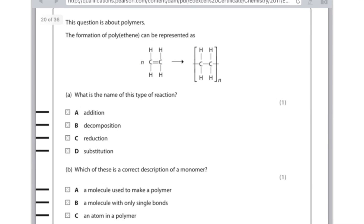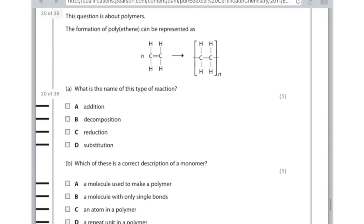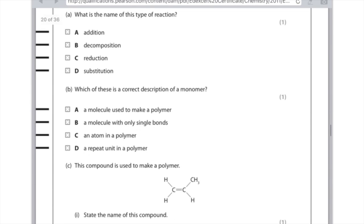This question is about polymers. The formation of polyethene can be represented as, what is the name of this type of reaction? Well, it is addition. So you need to put a tick in A. The reason why it's addition is because you're adding hydrogen atoms to this unsaturated compound, which was the alkene ethene. It's just addition, addition polymerization.